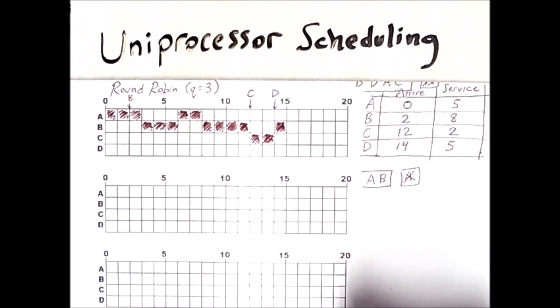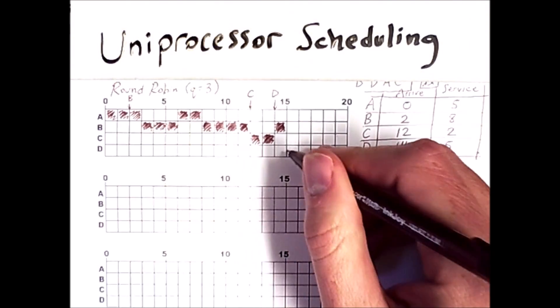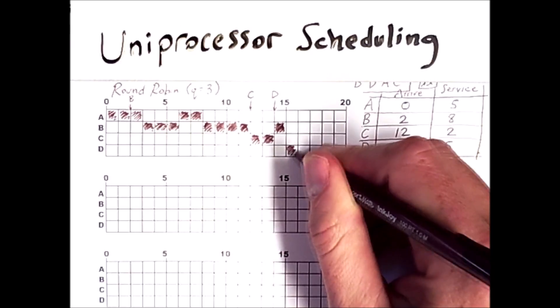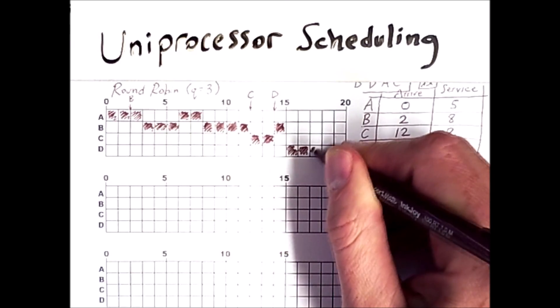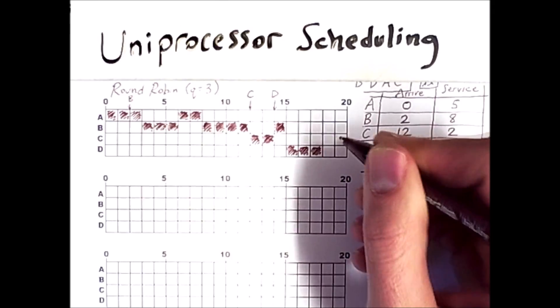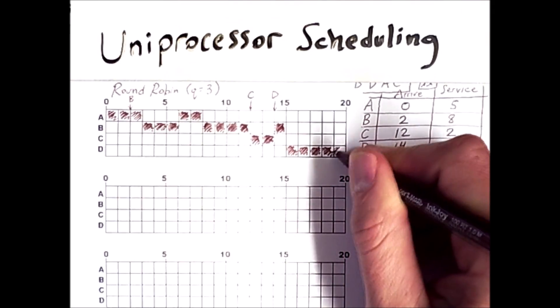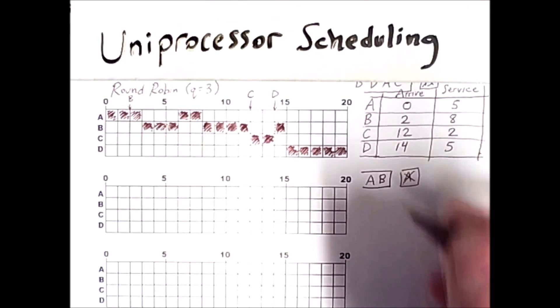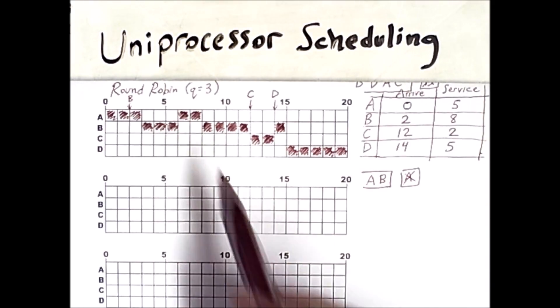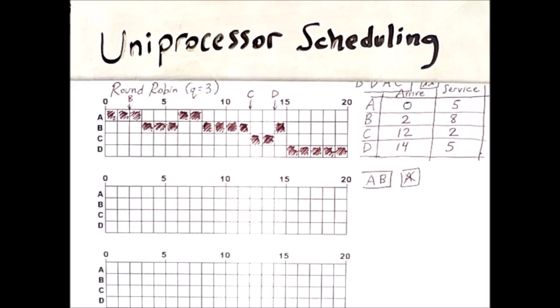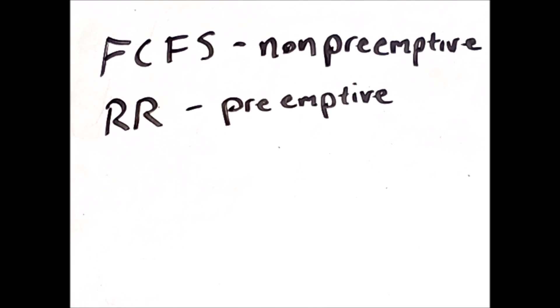And D gets its full quantum, which consists of three units. But after those three units, it is the only process in the system. So it simply keeps going to finish the full five. So there's an example of how round robin with a larger quantum can behave a bit unusually. Especially if processes are arriving, or rather perhaps not arriving at the point when a quantum would otherwise be expired.